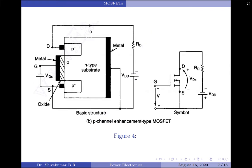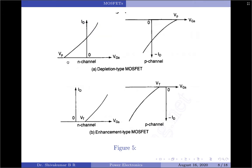For the P channel enhancement type, the polarities of VDS, IDS, and VGS are simply reversed. Looking at the transfer characteristics of the MOSFETs: for the N channel depletion type, the pinch-off voltage VP is negative, whereas for the P channel depletion type it is positive. For the N channel enhancement type it is positive, and for the P channel enhancement type it is negative. Regarding current direction, for N channel types the current is positive, and for P channel types the current is negative.